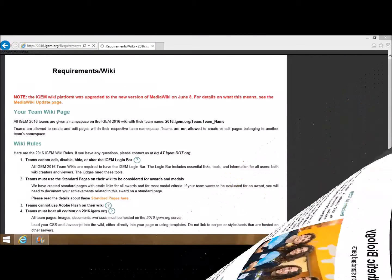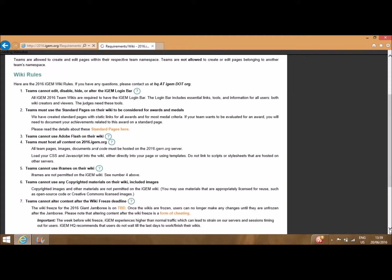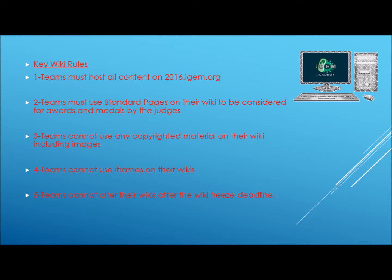Under the section titled Requirements, you are able to browse a list of some of the key rules and regulations as regards the wiki. Teams must host all content at 2016.iGEM.org. Teams must use the standard pages on their wiki to be considered for awards and medals. Teams cannot use any copyrighted materials on their wiki, including images. Teams cannot use iframes on their wiki and cannot alter content after the wiki freeze deadline.